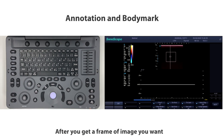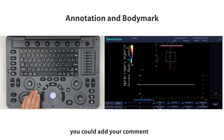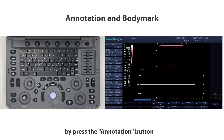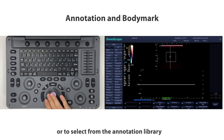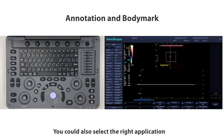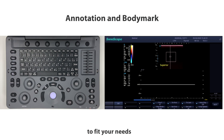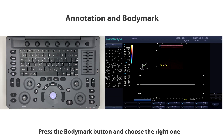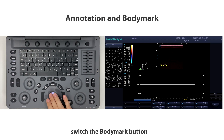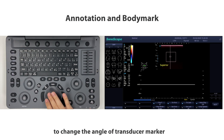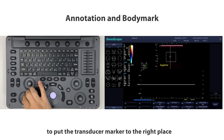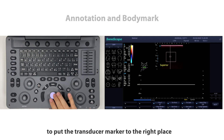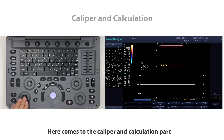After getting the image you want, you can add a comment by pressing the Annotation button to activate annotation input or select from the annotation library. Choose the right application to fit your needs. Press the Body Mark button, choose the right one, switch the body mark button to change the angle of the transducer marker, and move the trackball to place the transducer marker in the right position.